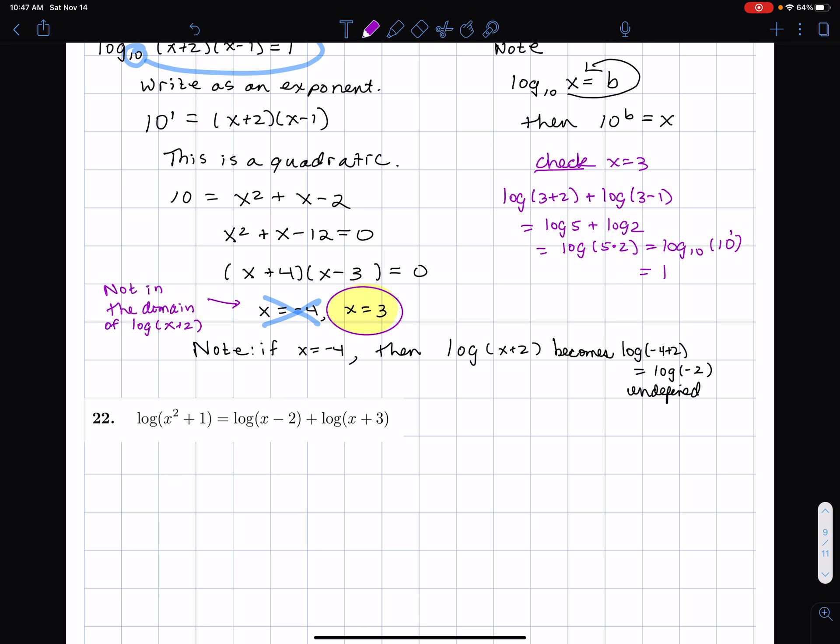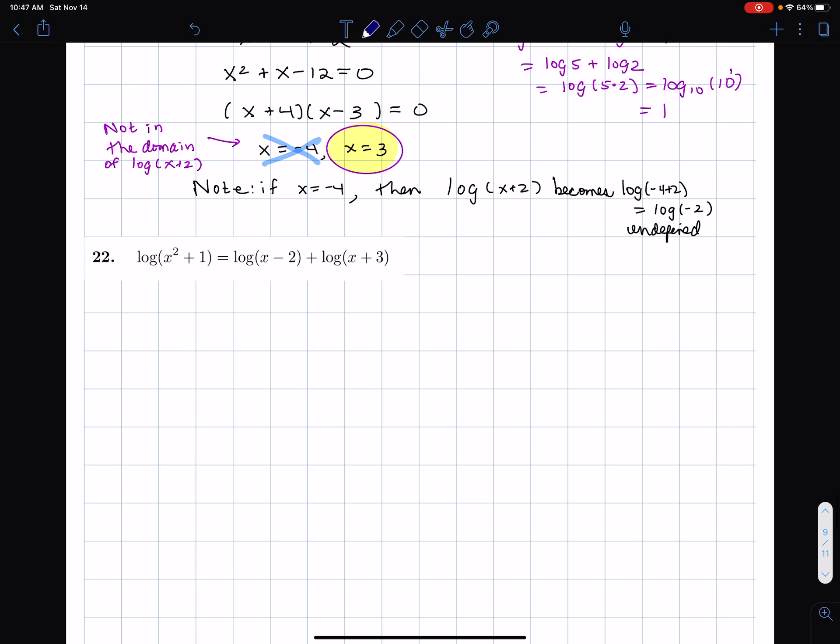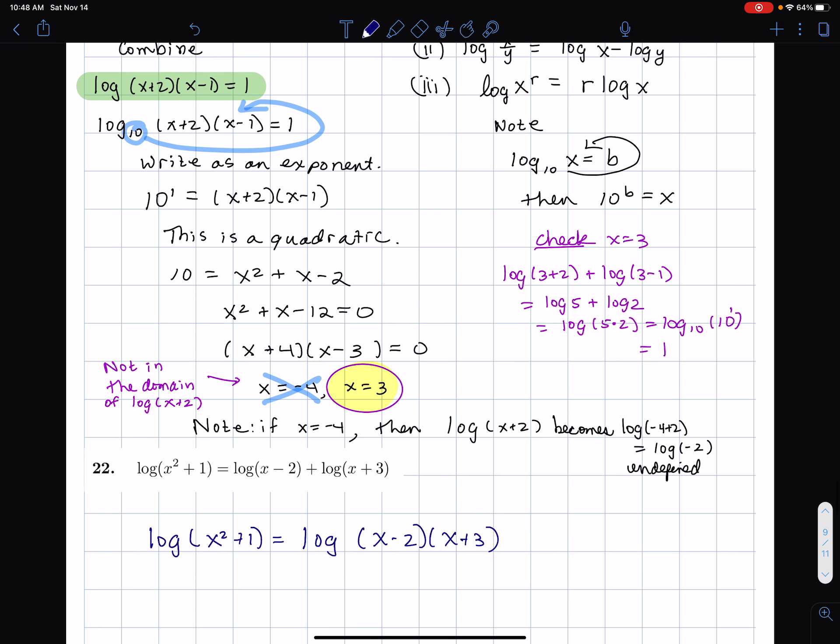Here when we combine, and this next problem, same thing we're going to solve. For this next problem, when I combine, I'm going to use the property where I can combine. I have log plus log. I combine and bring them all into one log of a product. Okay. Now we have a log equals a log. See how this is different? The other one had a log equals a number. And now we have a log equals a log.